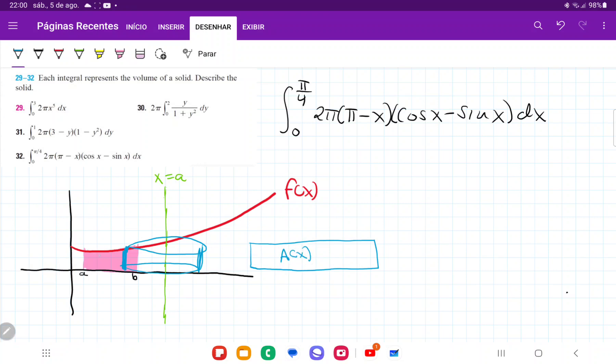And it's an area as a function of x because the further that I move along here, the wider that my cylinder is going to become.